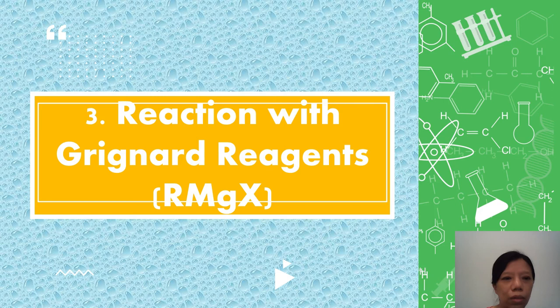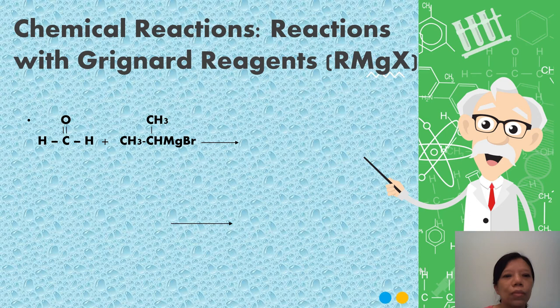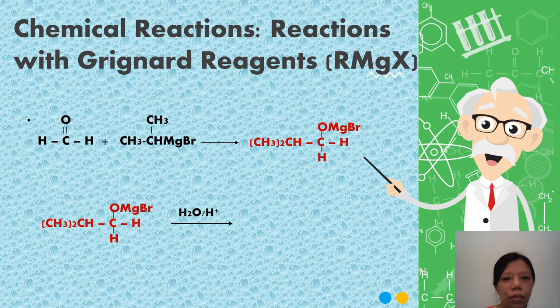Next reaction is reaction with Grignard reagents. It will form the intermediates which are unstable. After hydrolysis with dilute acid, we will form the alcohols. If you have methanal reacting with Grignard reagents, after hydrolysis it will form primary alcohols.